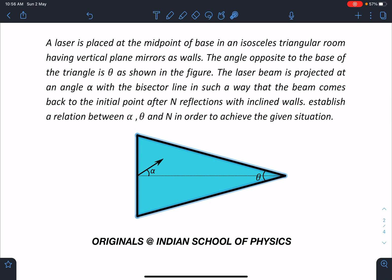Here is the statement of this problem: A laser is placed at the midpoint of base in an isosceles triangular room having vertical plane mirrors as walls. The angle opposite to the base of the triangle is θ as shown in the figure.